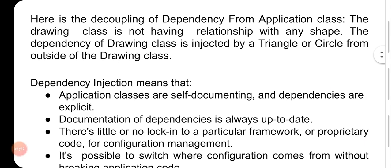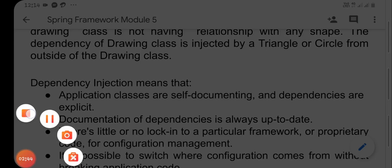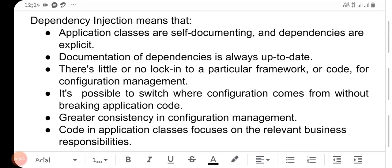The code and dependency are defined by the Spring framework through dependency injection. Application classes are self-documenting and dependencies are explicit. Documentation of dependencies is always up to date. There is little or no coupling to a particular framework for configuration management. It is possible to switch where configuration comes from without breaking application code. Greater consistency in configuration management. Code in application classes focuses on the relevant business responsibilities.